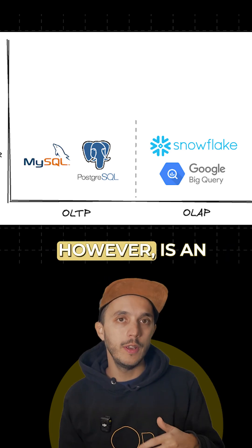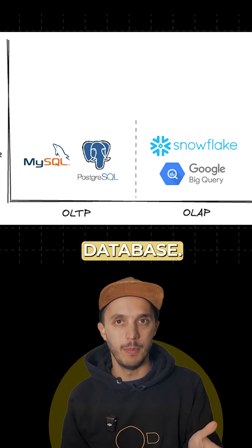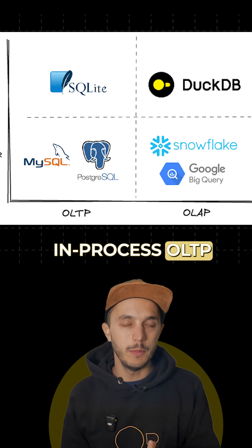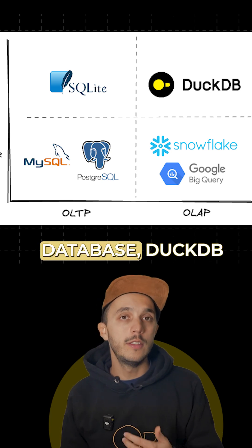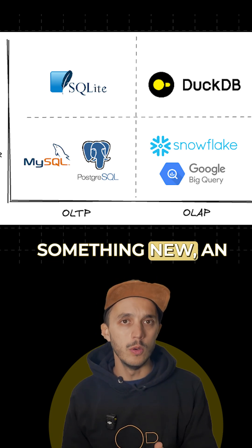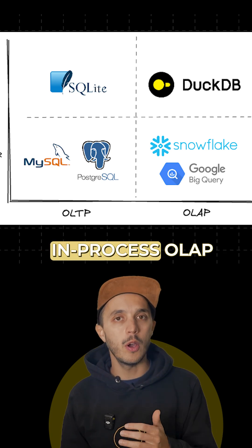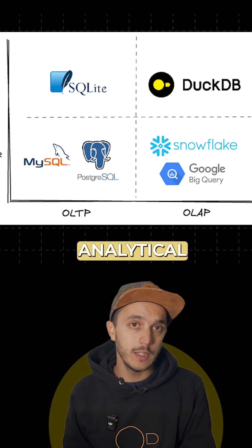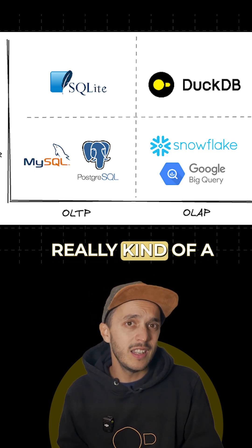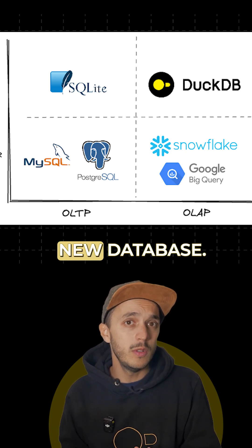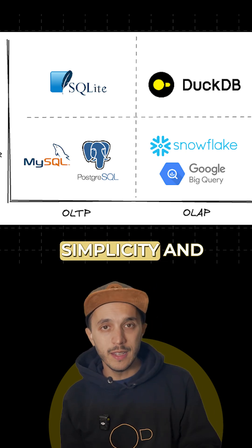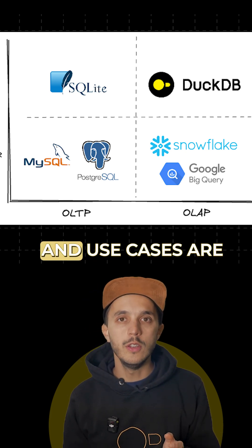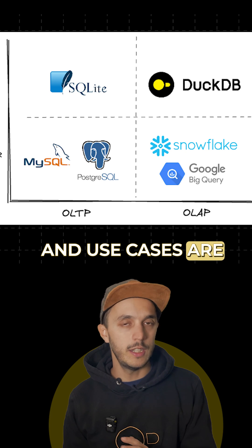DuckDB, however, is an in-process OLAP database. While SQLite is a well-known in-process OLTP database, DuckDB introduced something new: an in-process OLAP database optimized for analytical workloads. It's really a new kind of database. While it shares the simplicity and portability of SQLite, its goals and use cases are different. DuckDB is designed specifically for analytics and can run on virtually any platform.